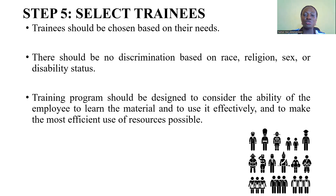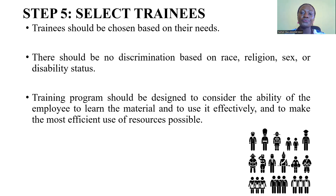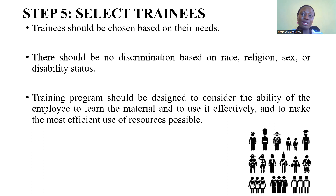A trainee with 10 years of experience in administrative work should not be put in the same training group with somebody who has just completed school and is now going to start learning administrative work. Based on experience and knowledge, you should be able to put these trainees into different groups — select the appropriate trainees for each training program. That is one of the ways by which the training program can succeed.